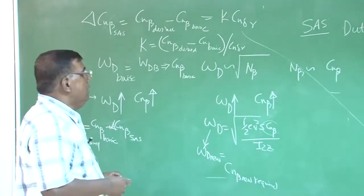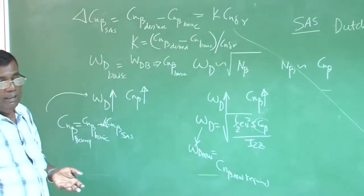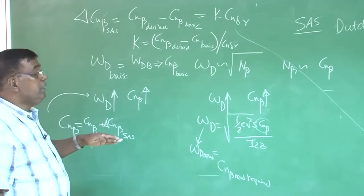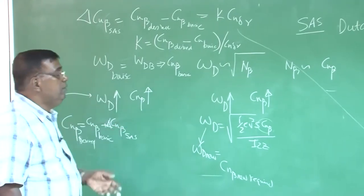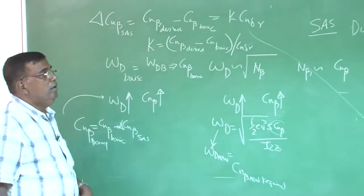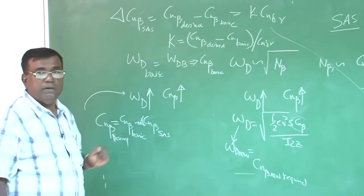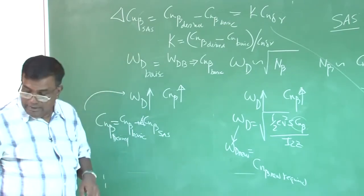What is the final thing? You know from the handling quality requirement, how much omega d you need to have. If it is less, you have to increase. So, you have to increase c n beta. If it is more, you have to reduce, reduce c n beta. So, accordingly, you decide what type of beta feeding you will be doing for natural frequency. Once that is done,